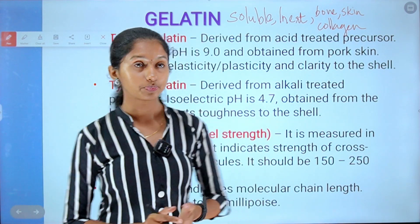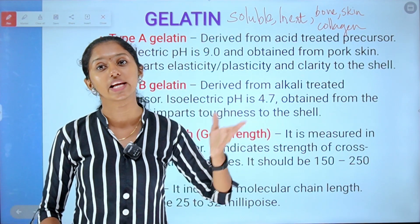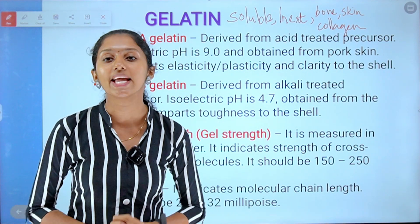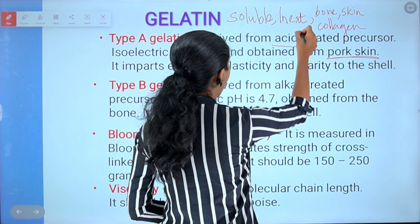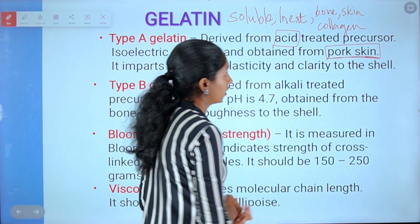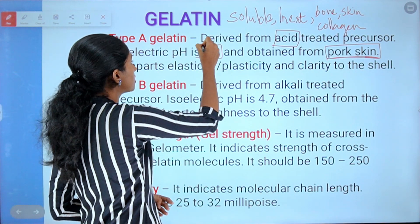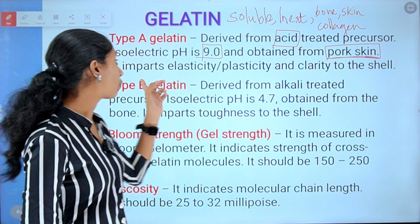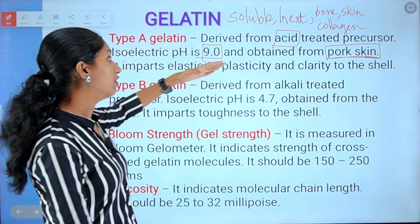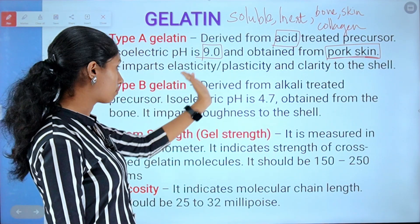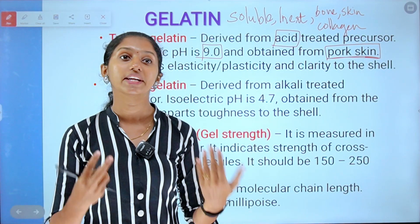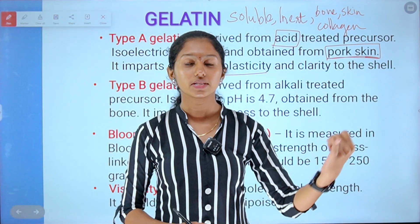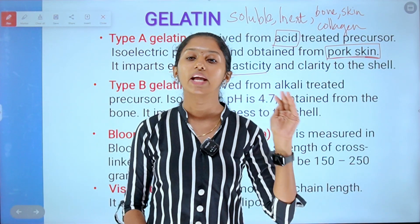There are two types of gelatin: Type A and Type B. Type A gelatin is derived from an acid-treated precursor. It is obtained from pork skin. The isoelectric pH is 9.0. Type A gelatin imparts elasticity, plasticity, and clarity to the shell.